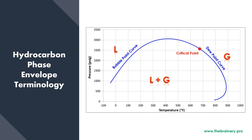Once we approach the dew point curve and cross over further to the right, all of the liquid also gets converted to gas. This means the dew point curve marks the completion of phase change from liquid to gaseous state. If we start operating to the right side of the dew point curve, we will be in a complete gaseous state.